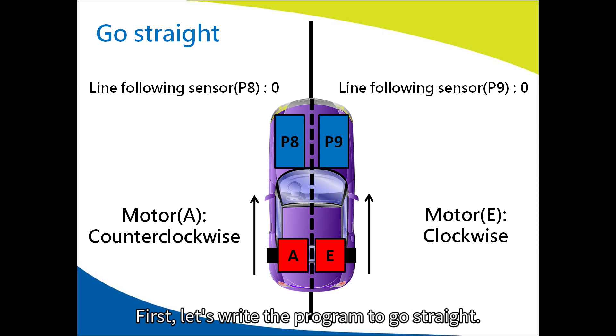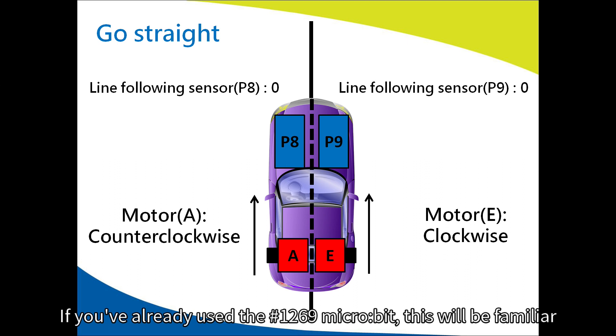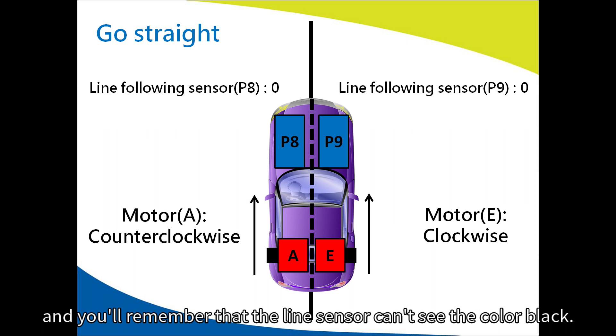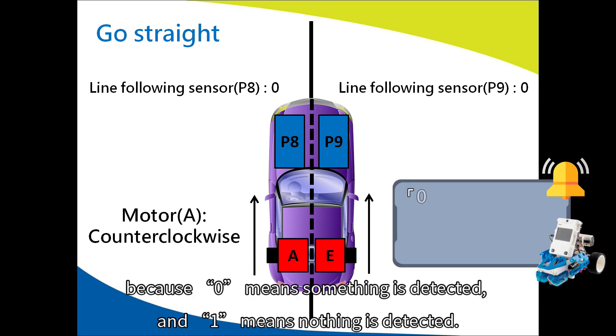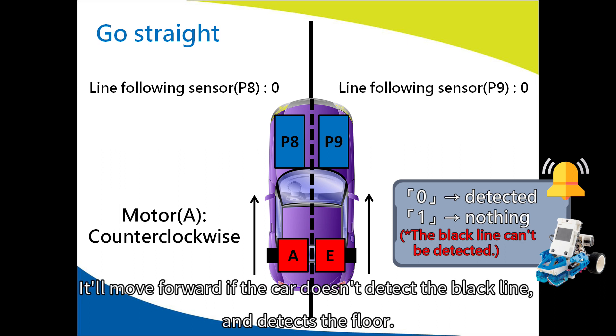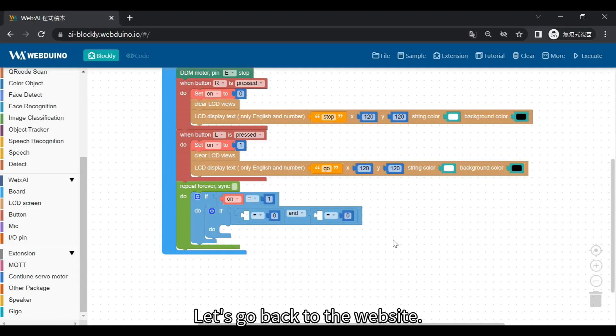First, let's write the program to go straight. In what situation will it go straight? Well, if the black line is in the middle of the two sensors, the powered tram will go straight. If you've already used the number 1269 micro bit, this will be familiar. And you'll remember that the line sensor can't see the color black. If it senses the floor, the value will be zero. Because zero means something is detected, and one means nothing is detected. It'll move forward if the car doesn't detect the black line and detects the floor. Now, if the line detector sees the floor, the value is zero. Let's go back to the website.